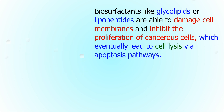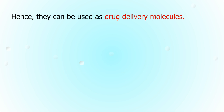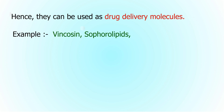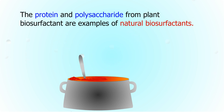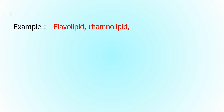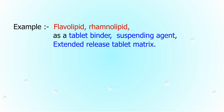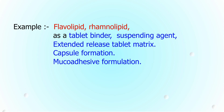Cell lysis occurs via apoptosis pathways, hence biosurfactants can be used as drug delivery molecules. Proteins and polysaccharides from plant biosurfactants are examples of natural emulsifiers in pharmaceutical industries, used to stabilize emulsions. Examples include flavolipid and rhamnolipid, used as tablet binders, suspending agents, extended-release tablet matrices, in capsule formation, and mucoadhesive formulations.